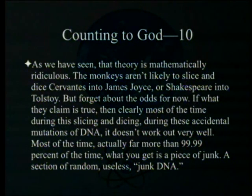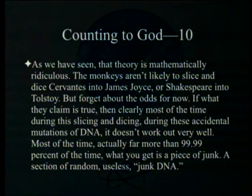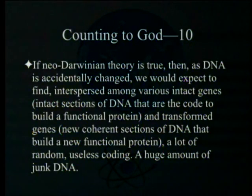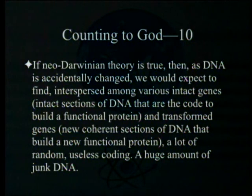As we have seen, that theory is mathematically ridiculous. But forget about the odds for now. If what they claim is true, then clearly most of the time during these accidental mutations of DNA — far more than 99.99% of the time — what you get is a piece of junk, a section of random, useless junk DNA. If neo-Darwinian theory is true, we would expect to find, interspersed among intact genes, a huge amount of random, useless coding — junk DNA.